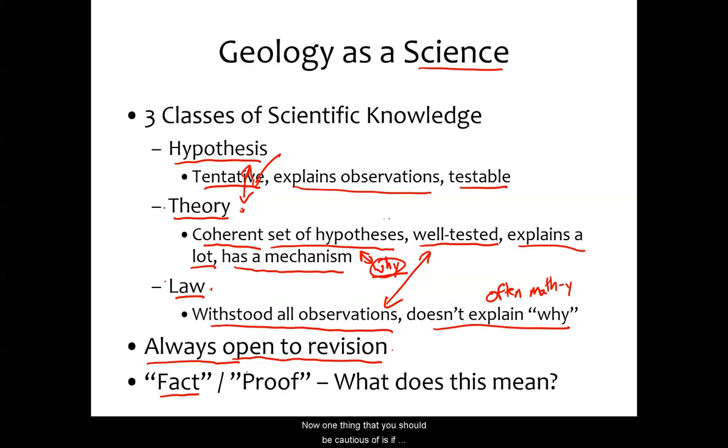Now, one thing that you should be cautious of is if somebody says scientific proof. Proof implies some sort of certainty. And as we said, science is always, always, always open to revision with new information. So if somebody claims to have proof of something, scientific proof of it, you should be skeptical. We haven't even proven that gravity can happen because we can't, because of the nature of empirical observations.